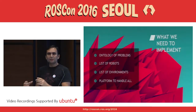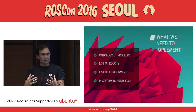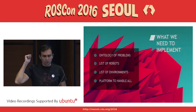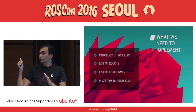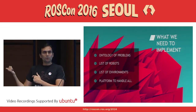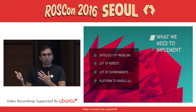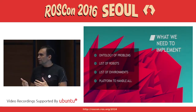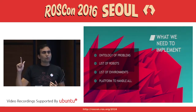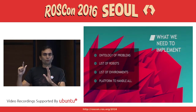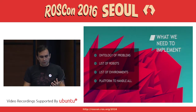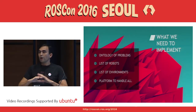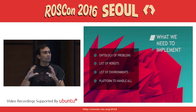What do we need to implement this as a real system, not just a theoretical one? We need an ontology of robotics problems we want to compare. We also need a list of robots to use for each problem in the ontology, a list of environments, and a web platform that handles it all.